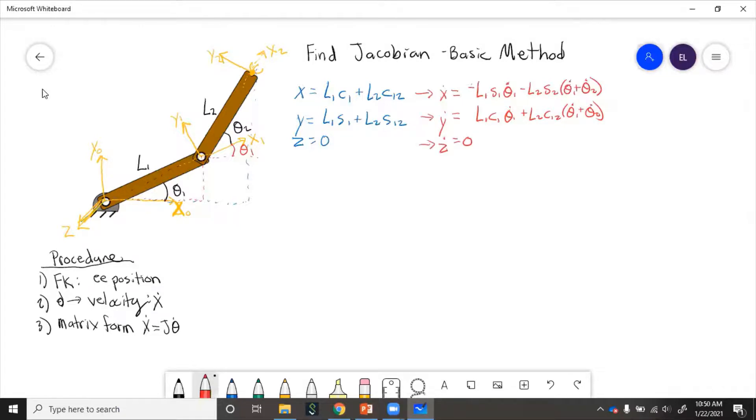Next, we put these in matrix form. So we'll have the x dot matrix, which is really x dot, y dot, z dot. Then we multiply it by theta one dot, theta two dot.